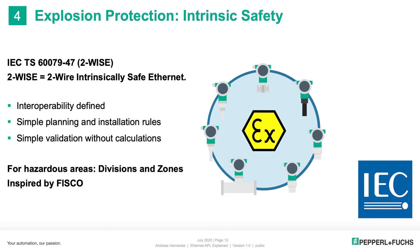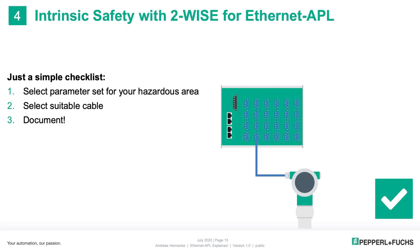2WISE is short for 2-Wire Intrinsically Safe Ethernet, a definition within the IEC standard for explosion protection. 2WISE defines interoperability, prescribing limits to values for the electrical circuit. Like FISCO — the Field Bus Intrinsically Safe concept — 2WISE prescribes simple planning and validation rules without calculations. Some of the people that contributed to the 2WISE standard were also involved when FISCO was standardized about 25 years ago. Verification only requires a simple checklist: select the hazardous area classification, select the instruments and cable with suitable parameters, and document the installation. This is sufficient to verify that explosion protection is in place and that the plant is safe to operate.